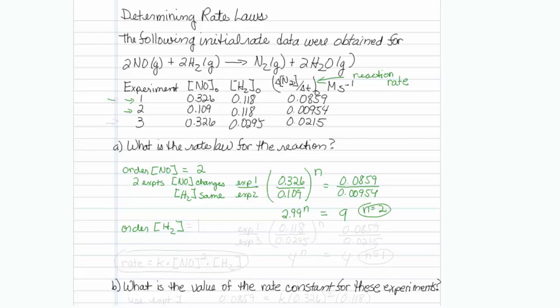So I think I have to compare experiments 1 and 3 actually. So for this, I will take experiment 1 and compare it to experiment 3. So in experiment 1, my H2 is 0.118, and my rate is 0.0859. In experiment 3, my H2 is 0.0295, and my rate is 0.0215.